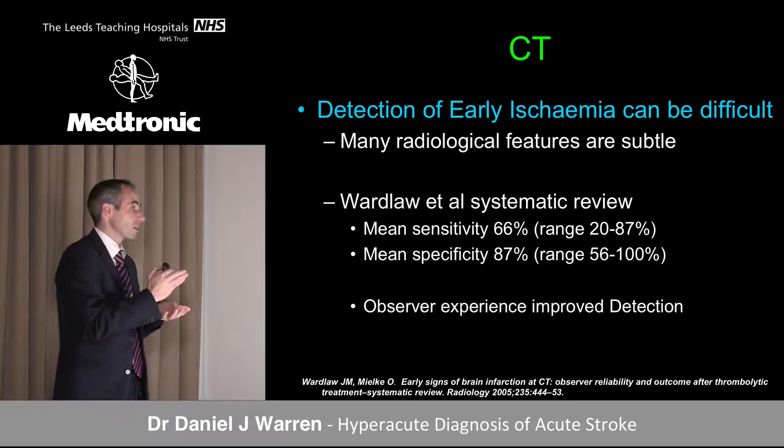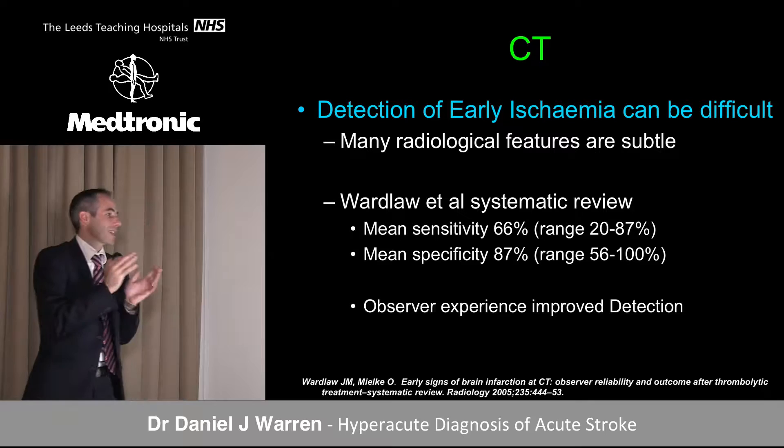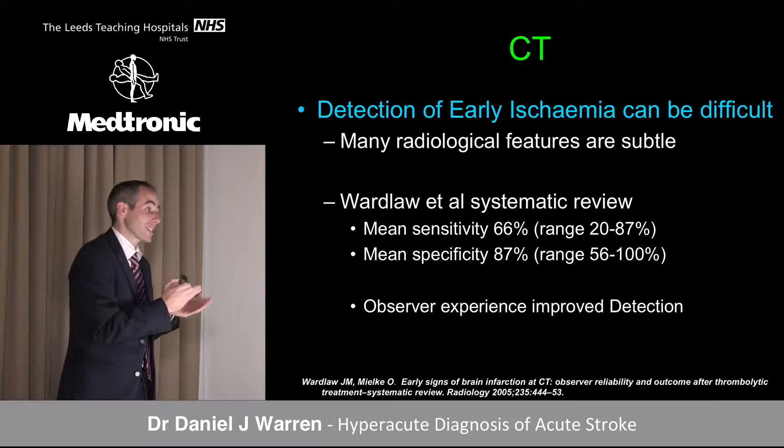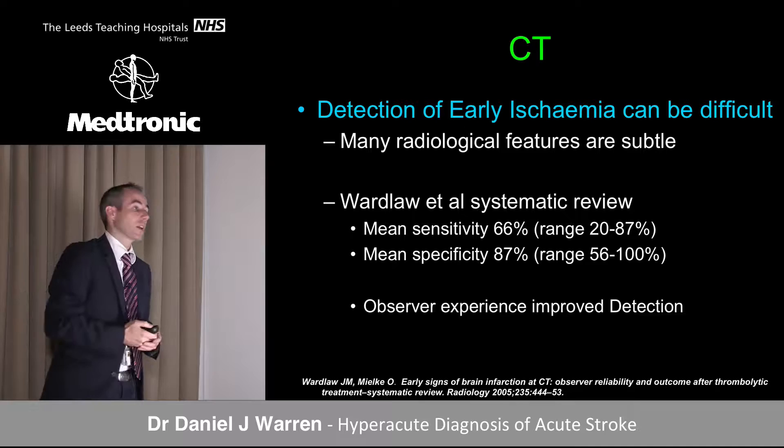Detection on CT can be difficult in the very early stages because a lot of the signs are very subtle. Joanna Wardlaw and colleagues did a systematic review and found the sensitivity for detection of early ischemic change on CT to be quite low at 66%. But with time and observer experience, the rate of detection improved.